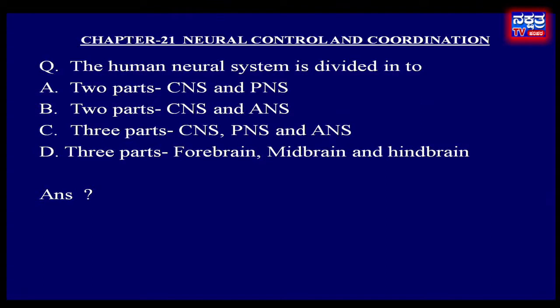The human neural system is divided into: A. Two parts, CNS and PNS. B. Two parts, CNS and ANS. C. Three parts, CNS, PNS and ANS. D. Three parts, forebrain, midbrain and hindbrain.